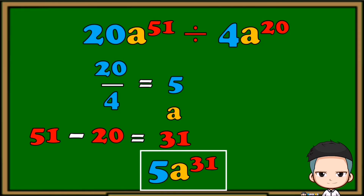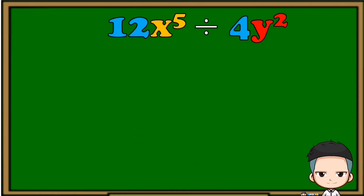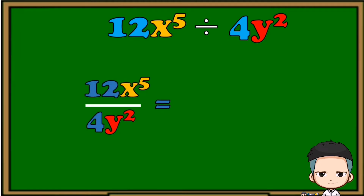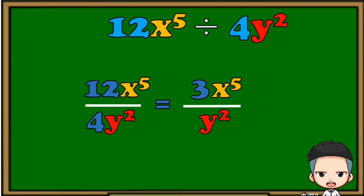Now let's try to divide polynomials with different variables. First, put them in fraction form. Next, divide their numerical coefficients — 12 divided by 4 is 3. Then copy the variables to their respective places: x raised to 5 on the numerator and y squared on the denominator. The final answer is 3x raised to 5 over y squared.